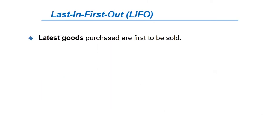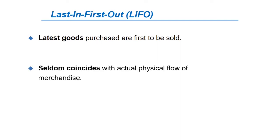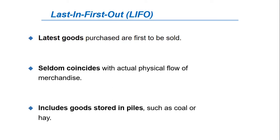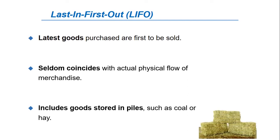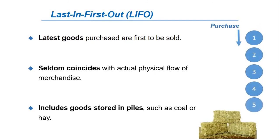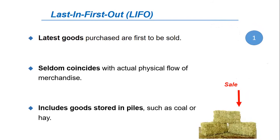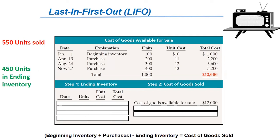The LIFO method assumes that the latest goods purchased are the first to be sold. LIFO seldom coincides with the actual physical flow of merchandise. Exceptions include goods stored in piles, such as coal or hay. The costs of the latest goods purchased are the first to be recognized in determining the cost of goods sold. As you can see, the ending inventory consists of the first units purchased. We will use the same example and figures to determine the cost of goods sold using the LIFO method.